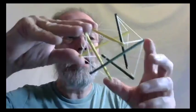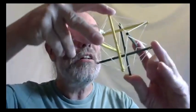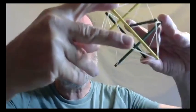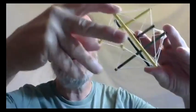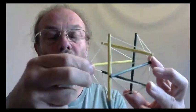This model here has three yellow struts and three green struts. The green struts in this one have a left-handed twist; the yellow struts have a right-handed twist.